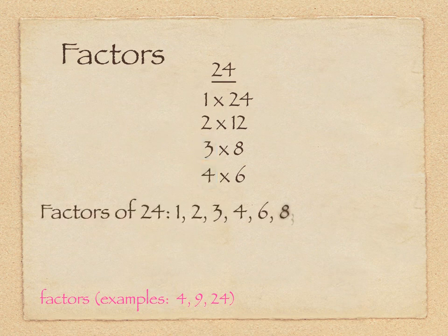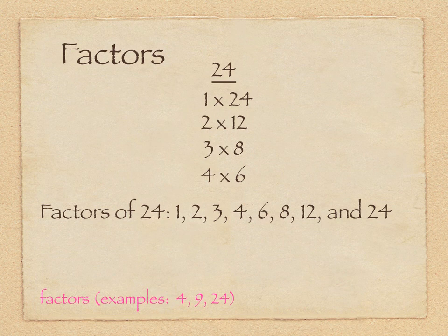So factors of twenty-four are one, two, three, four, six, eight, twelve, and twenty-four. We usually like to write it in a list, just like that.